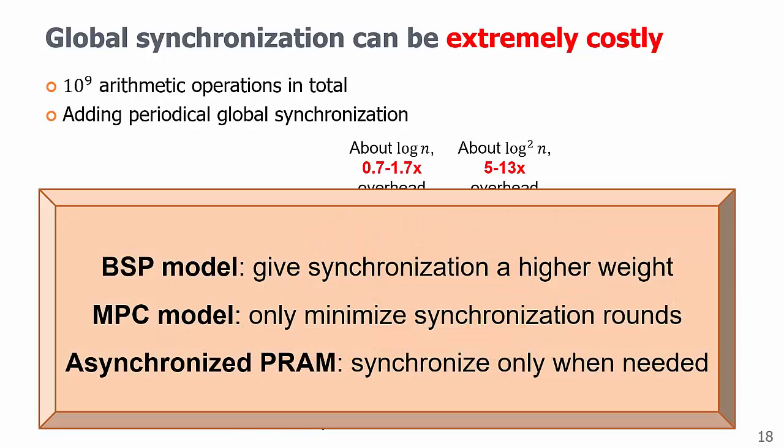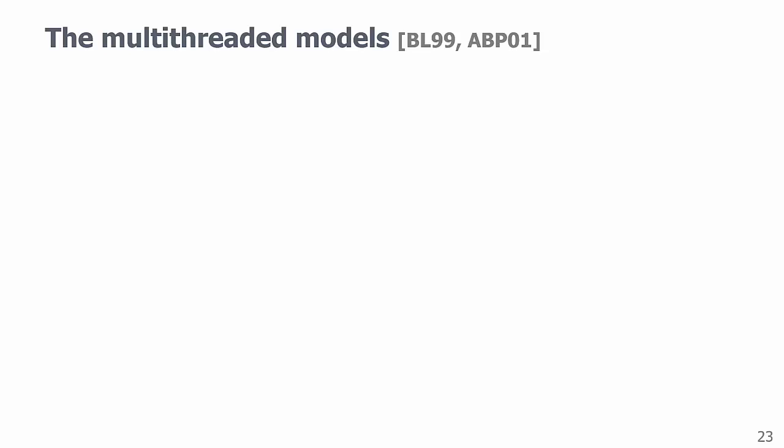There were different attempts to fix the PRAM model basically by giving synchronization a higher weight, but a widely adopted solution is to not consider synchronization as a primitive, which is the multi-threaded model that reflects the real architecture of a shared memory parallel machine better. I should mention here that it is actually a class of models that are widely used in design and analyze recent algorithms.